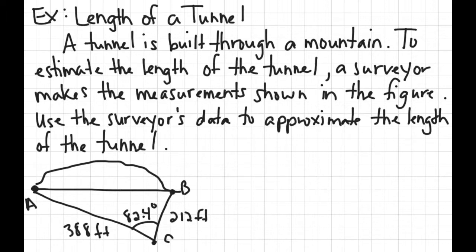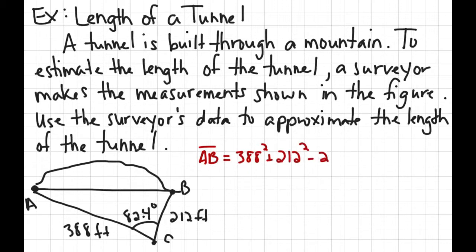A tunnel is built through a mountain. To estimate its length, a surveyor makes measurements shown in the figure. The surveyor is at point C, and from C to point A on one side of the mountain is 388 feet, from C to point B on the other side is 212 feet, and the angle between those two lengths is 82.4 degrees. To find the missing side AB, it equals the square of the other lengths added, minus 2 times those lengths times the cosine of the angle between them.